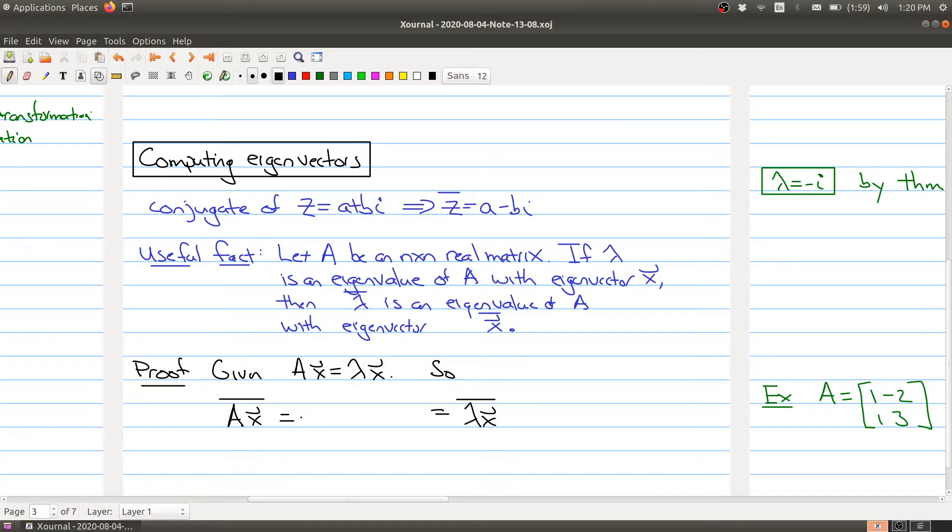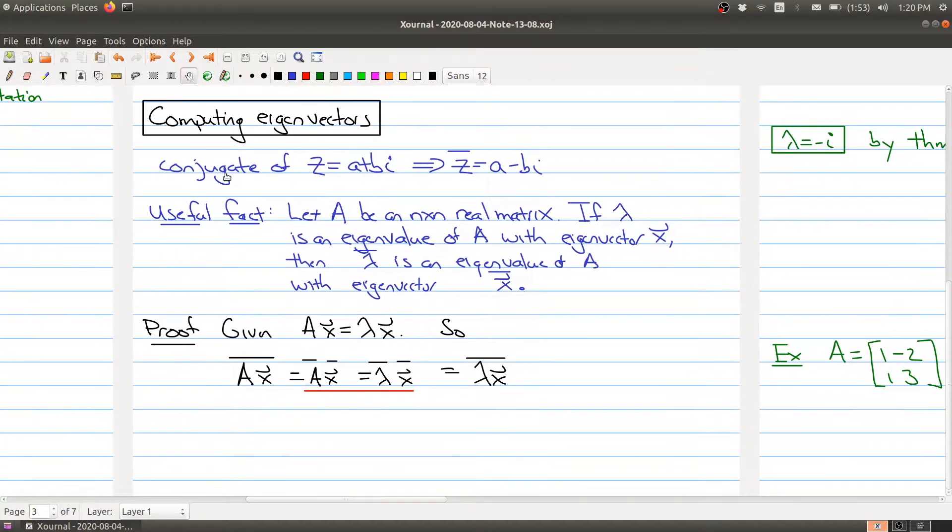But now using the properties of the conjugate, this is the same thing as the matrix A taking its conjugate, and the vector x taking its conjugate. And over here, this is the same thing as taking the conjugate of lambda times the conjugate of the vector x. So let's look at this part right here and simplify it.